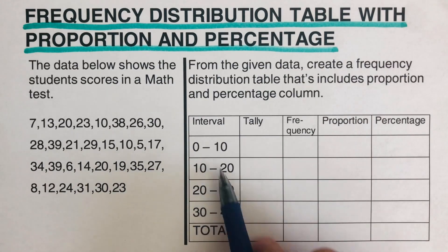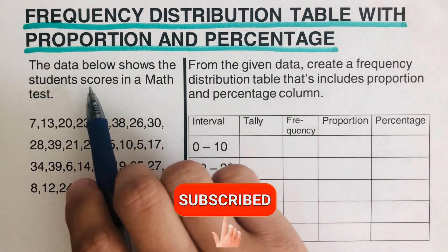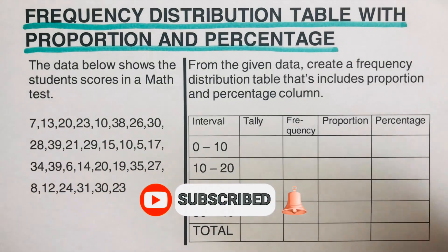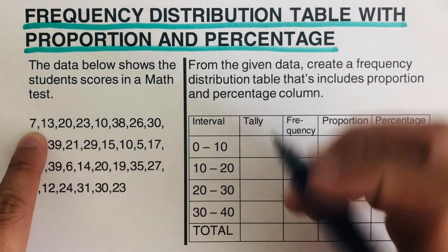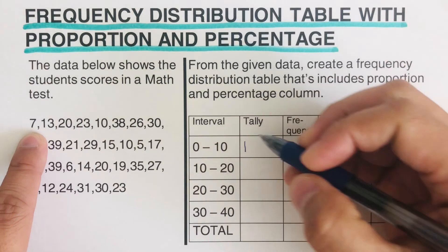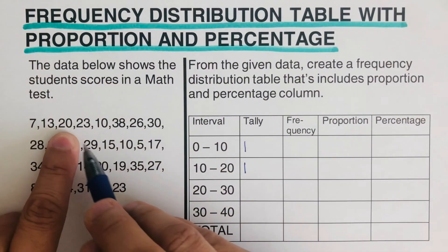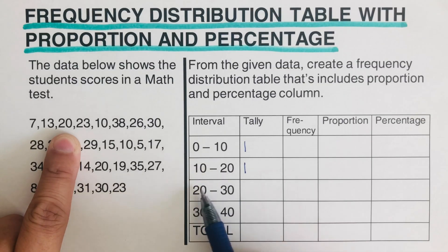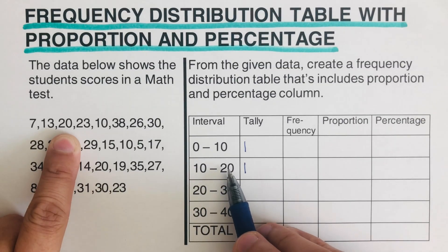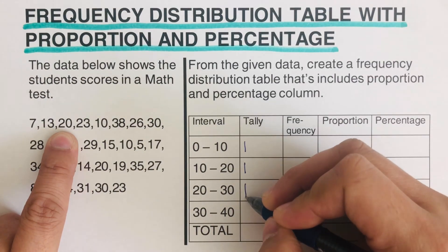Let's take the example: the data below shows student scores in a math test. We start with 7 — since 7 is between 0 and 10, I'll put the first tally there. 13 is between 10 and 20, so I'll tally that there. Now, 20 — others might wonder whether to put it in 10–20 or 20–30. Remember, the upper boundary of 10–20 is 19.9999, so the included 20 goes in the 20–30 row.